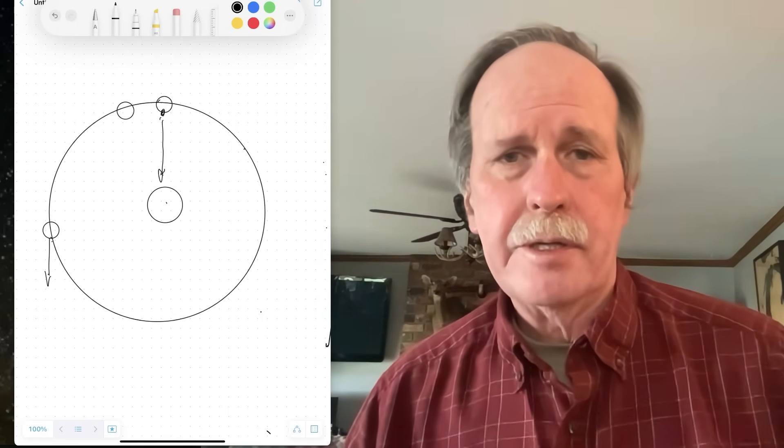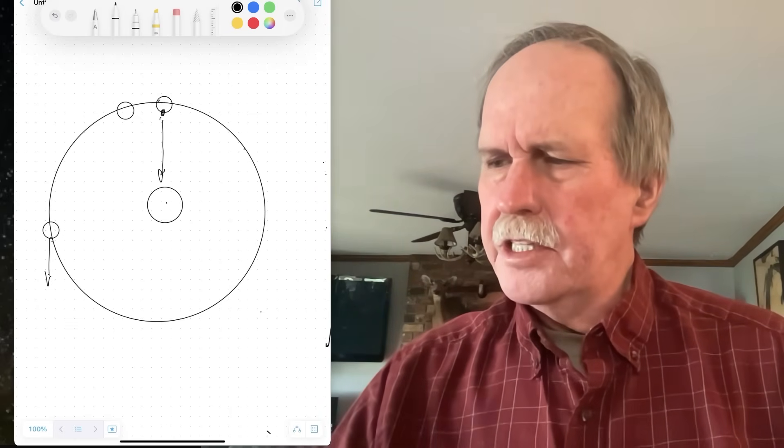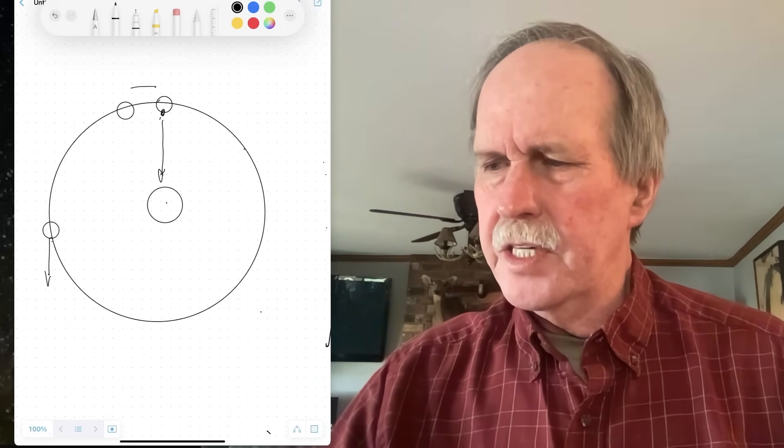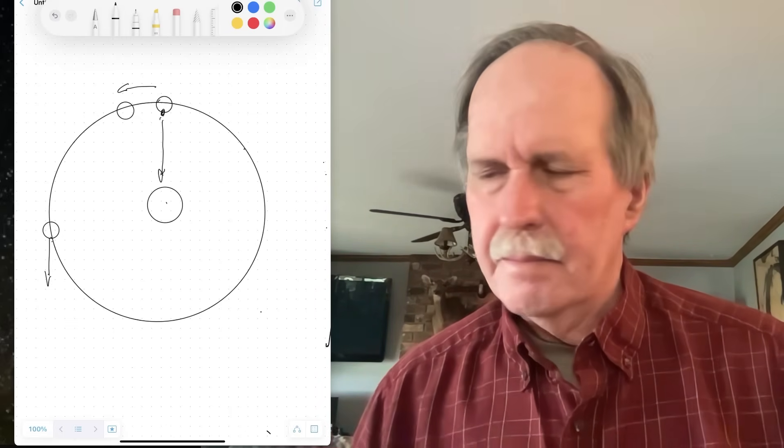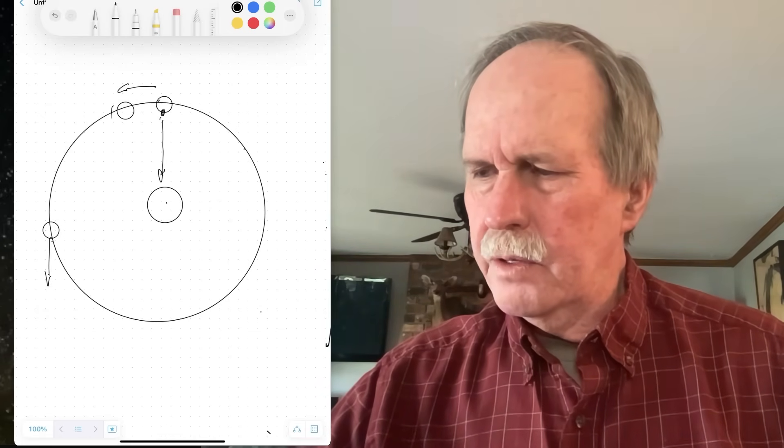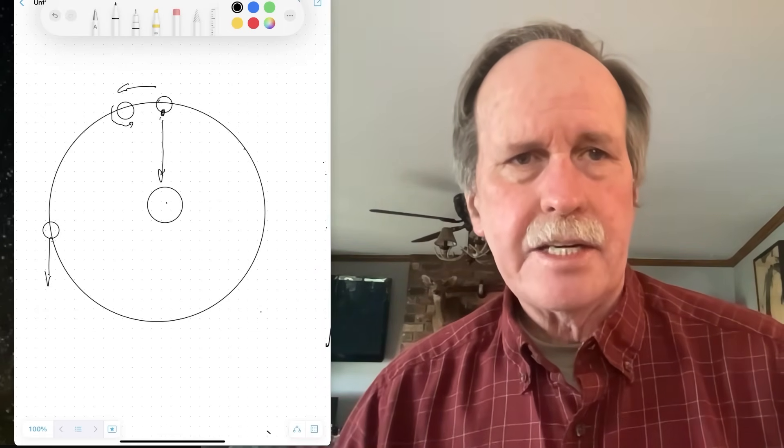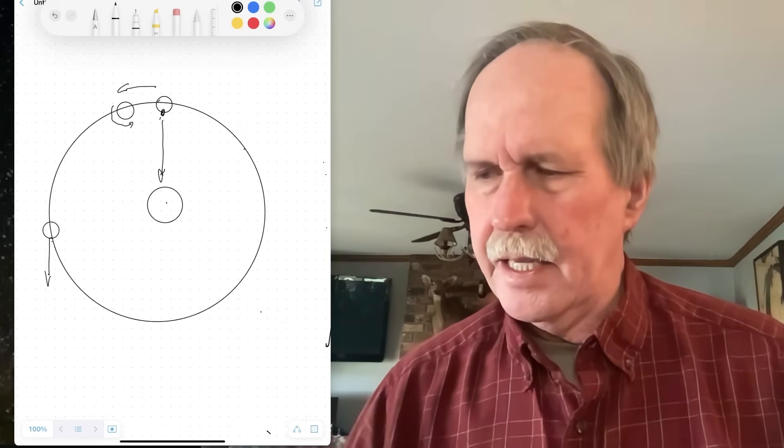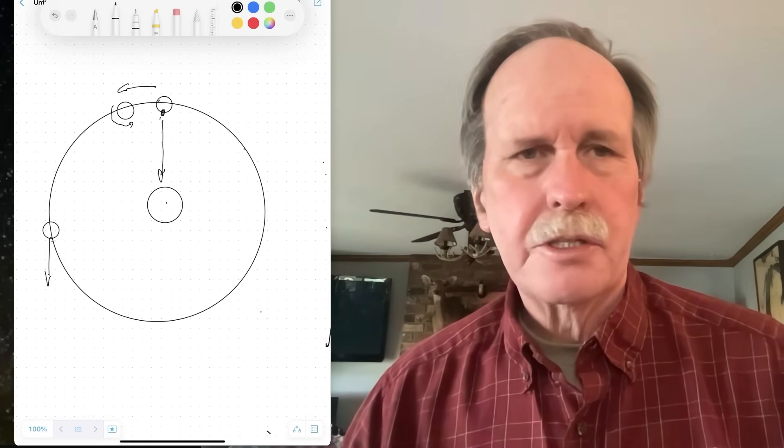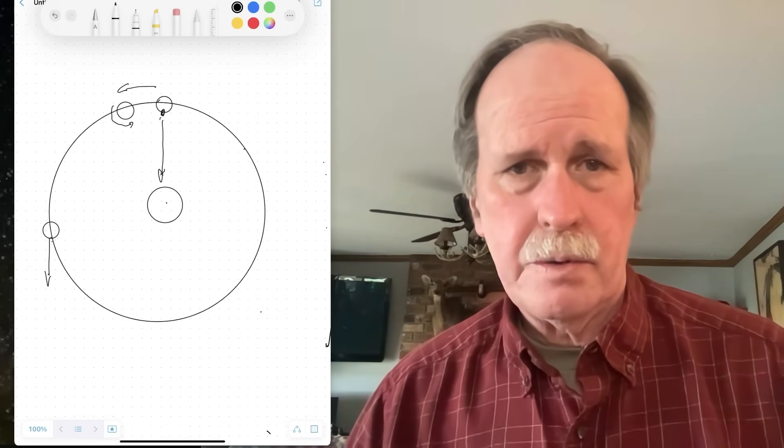Now let's go ahead and have a look at the Earth in orbit. As the Earth orbits the sun, it moves in this direction right here, and the Earth itself rotates pretty much in that direction. And again, what we're looking at here is we're looking at the Earth from above the North Pole.